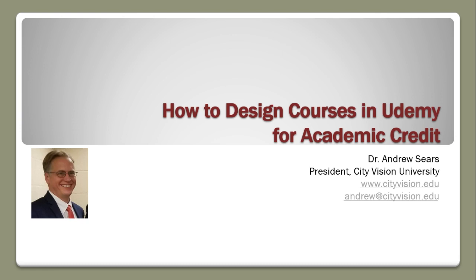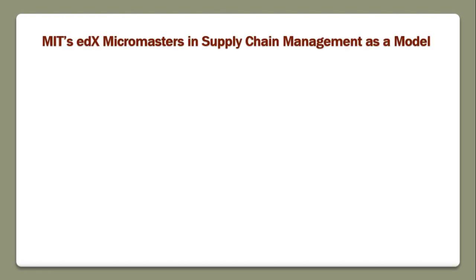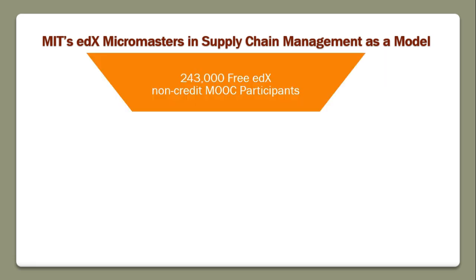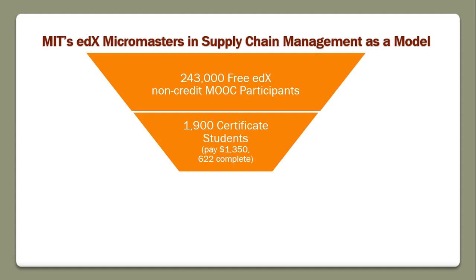We do this because we want our courses to be as widely available as possible. I am an MIT graduate and co-founded a research group there. MIT has really been a pioneer in this space and we're trying to replicate that model but make it more accessible to the masses. MIT was one of the first programs to combine MOOCs with credit, doing this with their edX MicroMasters in Supply Chain Management. They had 243,000 free edX non-credit MOOC participants, then 1,900 became certificate students paying $1,350, and 622 completed, with a small set that actually came to campus at MIT to do the degree.